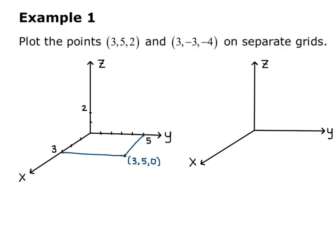Now, I want to go up 2 in the z-direction, so I mark off 2 on the z-axis, and I use that to create a three-dimensional box. So I also go up 2 in the z-direction from the point 3, 5, 0, and now that point on the corner of the box is the point 3, 5, 2.